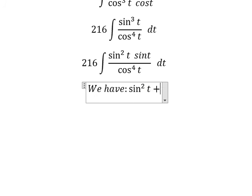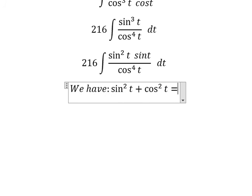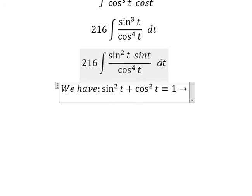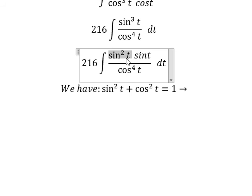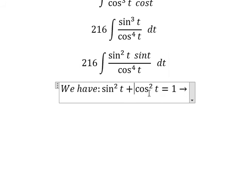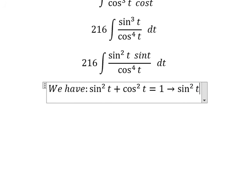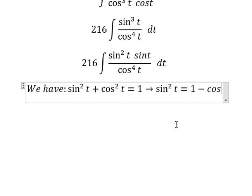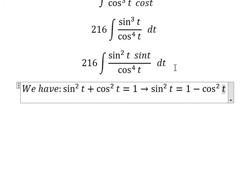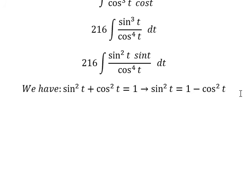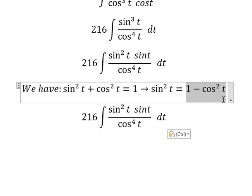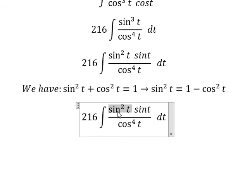We use the second formula: sine t squared plus cosine t squared equals 1. So cosine t to the power of 4 — this is replaced by sine t squared. Moving to the right, we have sine t squared equals 1 minus cosine t squared. I will substitute this in.